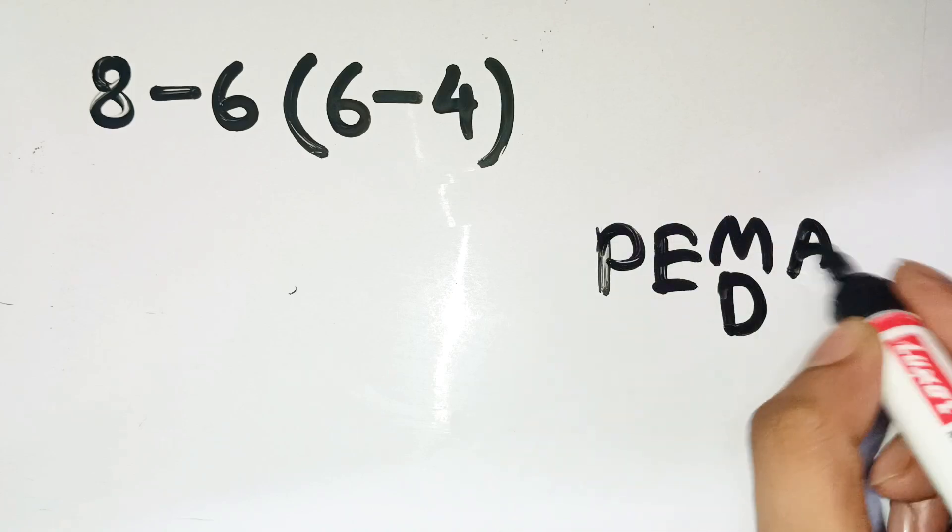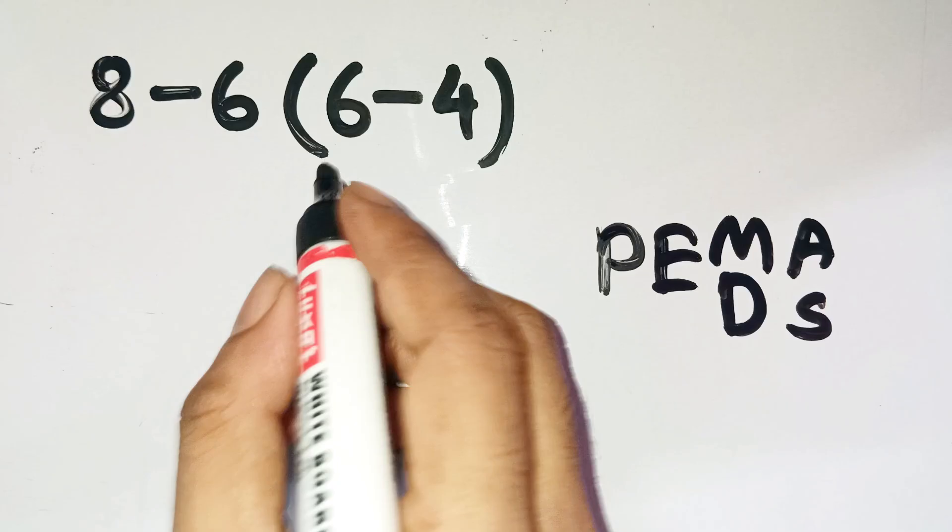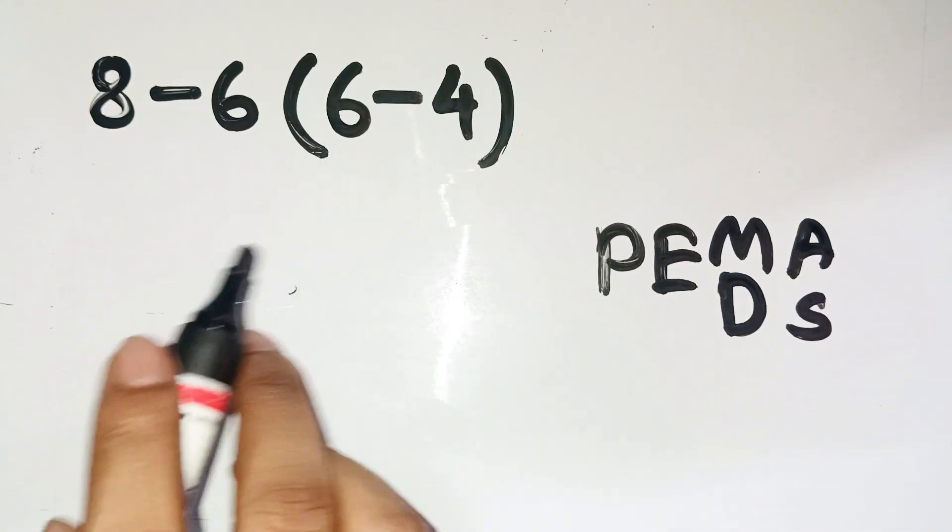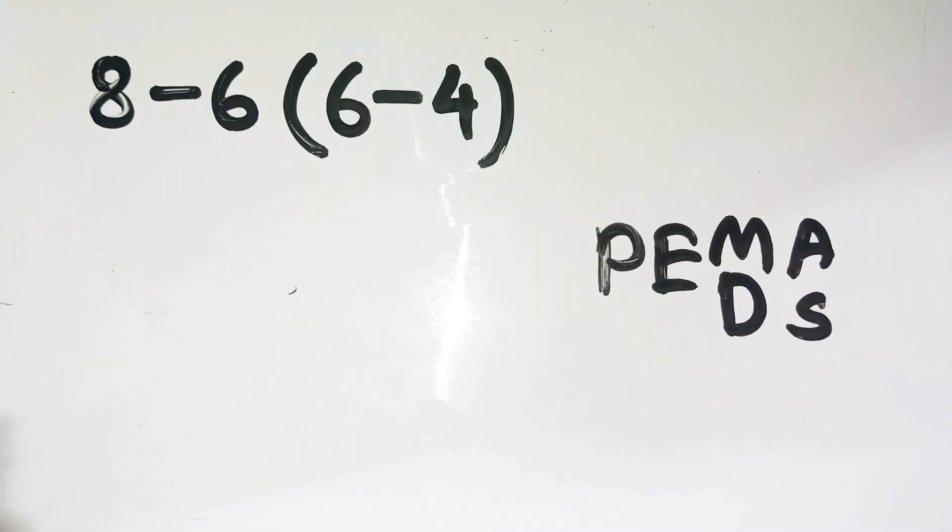So the question is eight minus six parentheses six minus four. When you look at it casually, your brain loves to simplify in the most obvious way, just doing subtraction left to right. That's what tricks almost everyone.